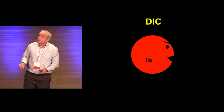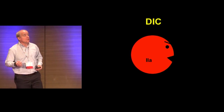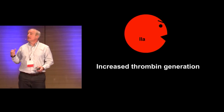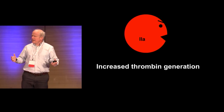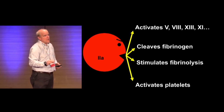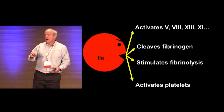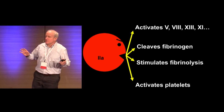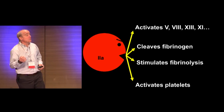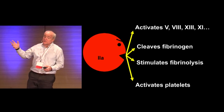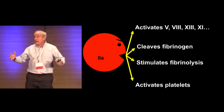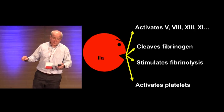What about DIC? DIC is an issue with thrombin, a key protein of coagulation, and in DIC we see increased thrombin generation. Thrombin is a pivotal molecule of coagulation — it activates factor five, factor eight, factor thirteen. It cleaves fibrinogen to form a clot. It stimulates fibrinolysis. It activates platelets. Thrombin is the master molecule of coagulation.